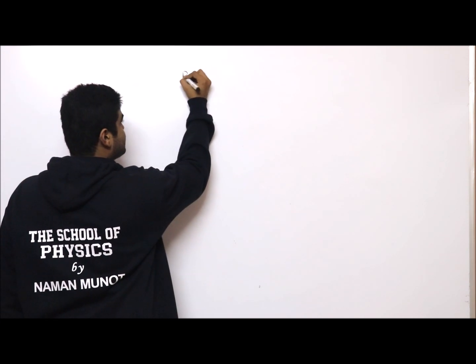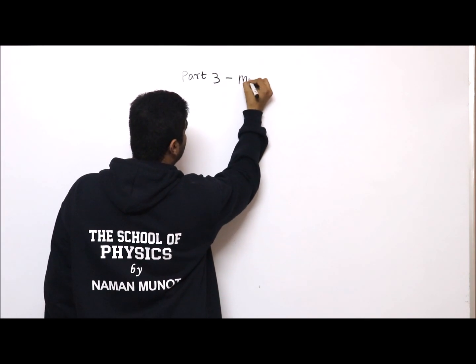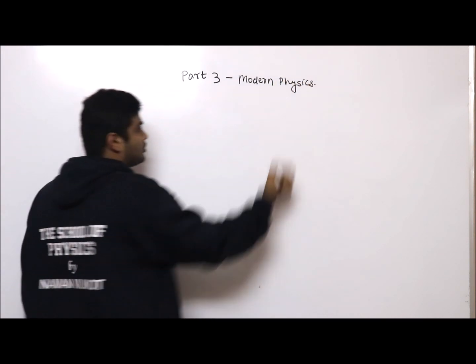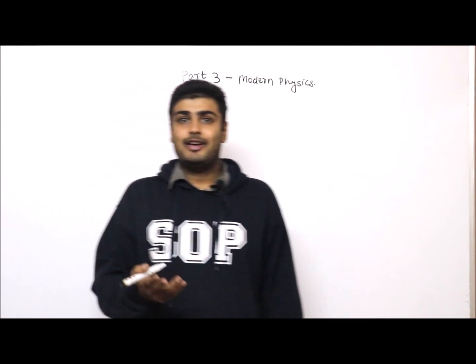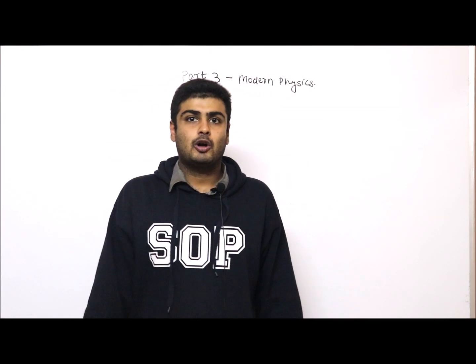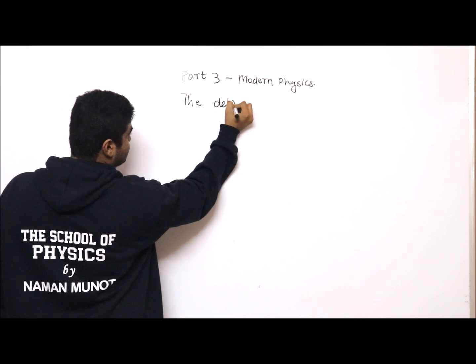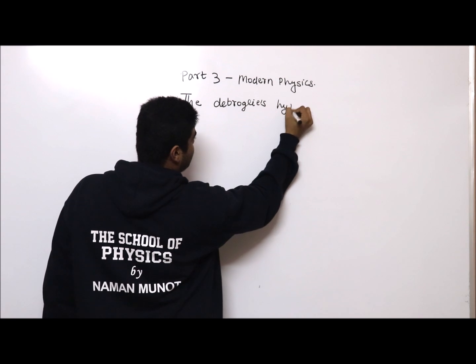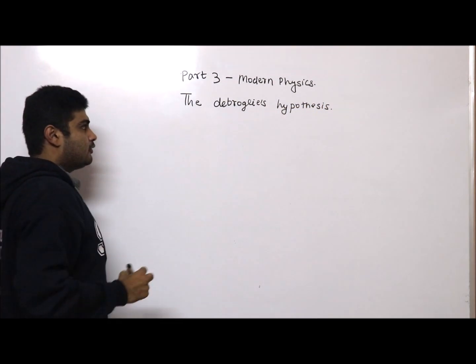Hello guys, welcome to Part 3 of the Modern Physics series by me, Naman Munod. I am Naman Munod and welcome to the School of Physics. Today we are going to study de Broglie's hypothesis — a very small and simple topic with just one or two formulas that you have to remember.